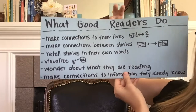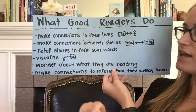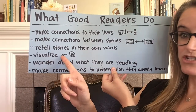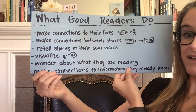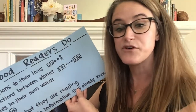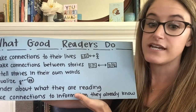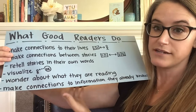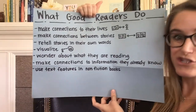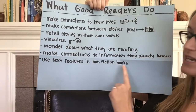Throughout the year we've been learning about what good readers do, and we've also been making a chart for that. We've learned things like: good readers make connections to their lives, they make connections between stories, they retell stories in their own words, they visualize or make pictures in their mind, we wonder about what we are reading, and we make connections to information that we already know. Something else we've been learning over the past few weeks is that good readers use text features in nonfiction books to help them locate and understand information. So we are going to add that to our chart as well.